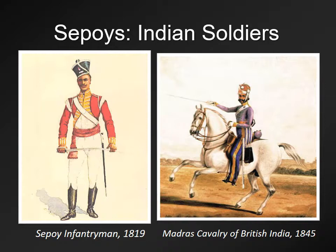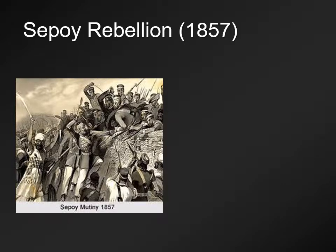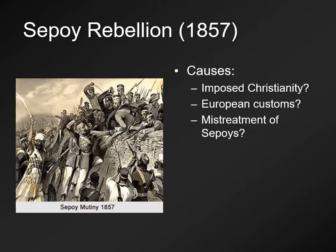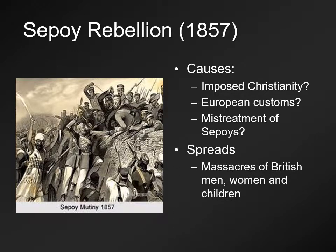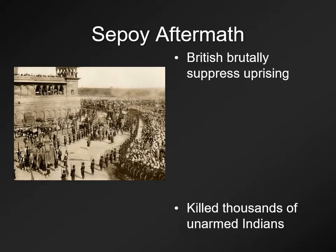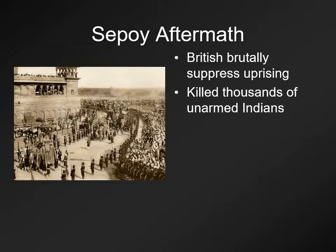In 1857, a pretty big event happens — what's known as the Indian Mutiny, or the Sepoy Rebellion, depending on where you read it. The causes are debated: some argue the British were trying to impose Christianity on Hindu and Muslim sepoys, or favored European customs at the expense of Indian customs, or there was mistreatment of sepoys. Whatever the case, the sepoys rose up and massacred British men, women, and children throughout various provinces. England called it an act of terrorism, and the British responded by sending more troops and brutally suppressing the uprising, killing thousands of unarmed Indians.